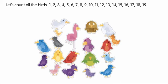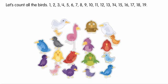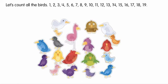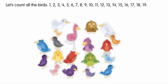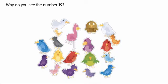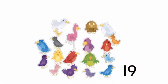Let's count all the birds. 1, 2, 3, 4, 5, 6, 7, 8, 9, 10, 11, 12, 13, 14, 15, 16, 17, 18, 19. Why do you see the number 19? There are 19 birds in all.